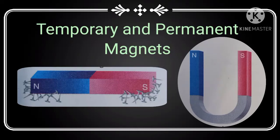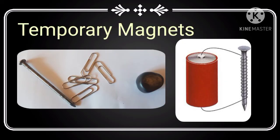Good afternoon class. Today we discuss temporary and permanent magnets. Those magnets that retain their magnetic property for a short duration of time are called temporary magnets. In other words, we can say that the magnets which lose their magnetism as soon as the cause producing them is removed are called temporary magnets.